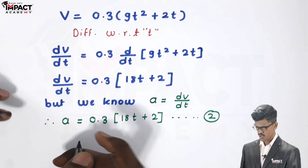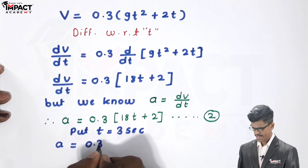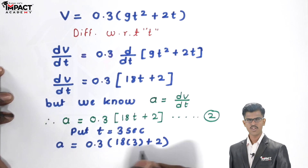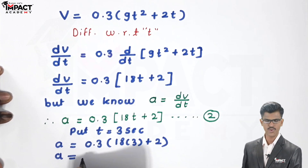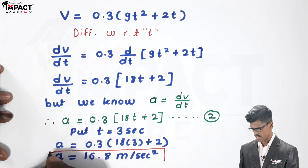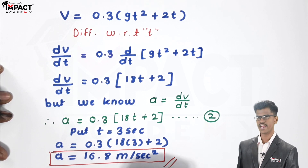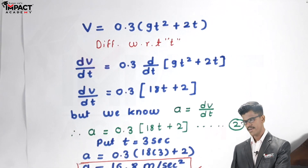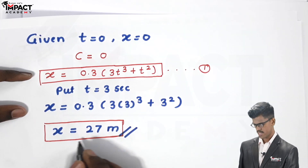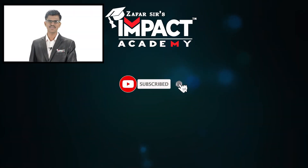Substituting t = 3 into the acceleration equation: a = 0.3(18×3 + 2). Calculating this gives acceleration a = 16.8 m/s². So the acceleration of the particle when t = 3 seconds is 16.8 m/s², and the position is 27 meters. Thank you — if you like my video please like, share, and subscribe to our channel.